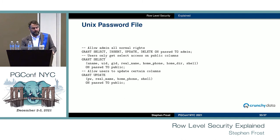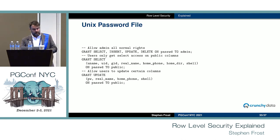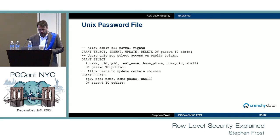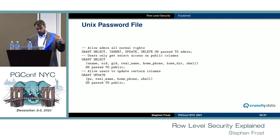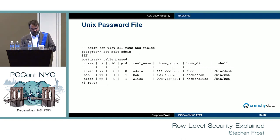We also utilize the grant system to control what columns a user can access. The admin role gets SELECT, INSERT, UPDATE, and DELETE on all columns. Users only get SELECT on certain columns — the password column is excluded, so users cannot query the password column of any user including their own. Users get UPDATE access on certain columns like password, real name, home, phone, and shell. Combined with row level security, an UPDATE command run by alice only sees alice's one row.